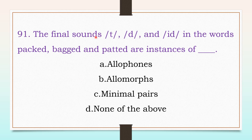The final sounds t, d, and id in the words 'packed', 'bagged', and 'patted' are instances of: allophones, allomorphs, minimal pairs, or none of the above. The answer is: allophones.